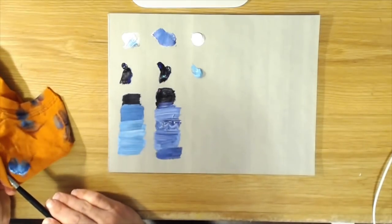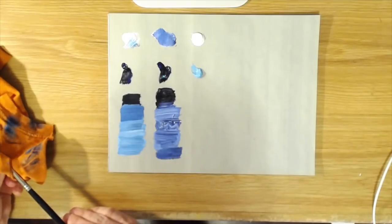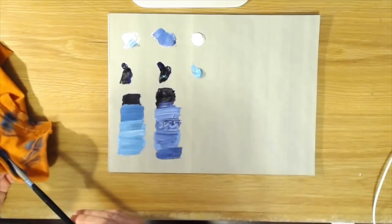So that's Indanthrone blue and like I said, because of its sort of inherent dullness it's good for landscapes and creating muted violets for that sort of like atmospheric perspective and that kind of thing.